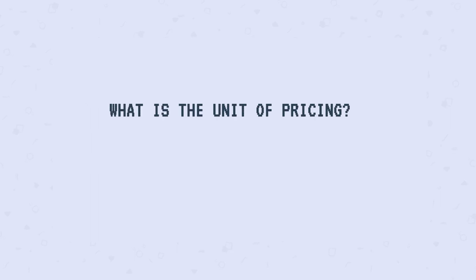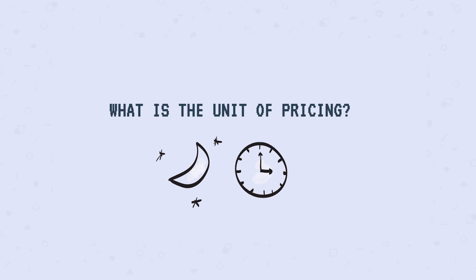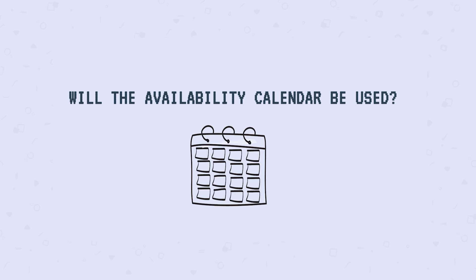What is the unit of pricing? For apartment rentals, this could be per night. For booking cleaning services, it could be per hour. Essentially, what is sold in your marketplace? And lastly, do you want your providers to be able to determine when a listing is available? With rentals, services, and bookings, your providers may benefit from an availability calendar where they can block off unavailable dates or hours.